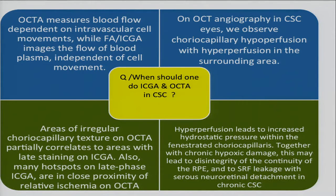On OCT angiography in CSC, we observe hypo- and hyperperfusion. There is mottled fluorescence on OCT angiography in the deeper layers as you cut the sections. What has been seen is that there are many hotspots in late-phase ICGA which are in close proximity to the ischemic areas on OCT. So the hypoperfusion or decreased-perfusion, low-flow areas on OCT correspond to hotspots on ICGA.